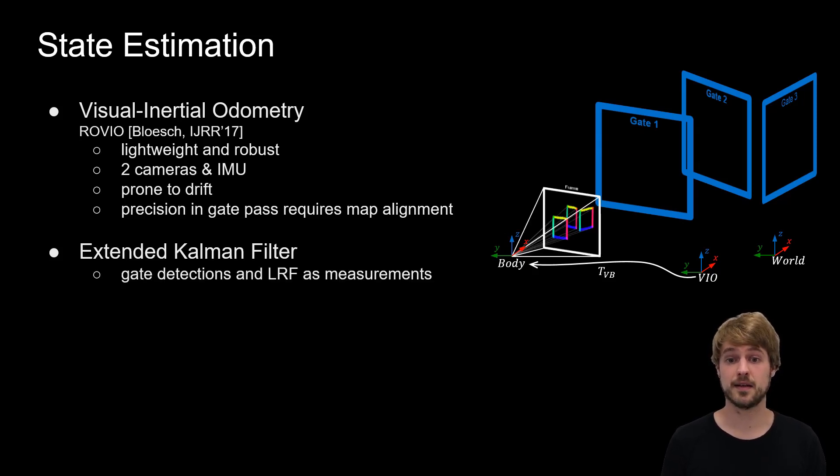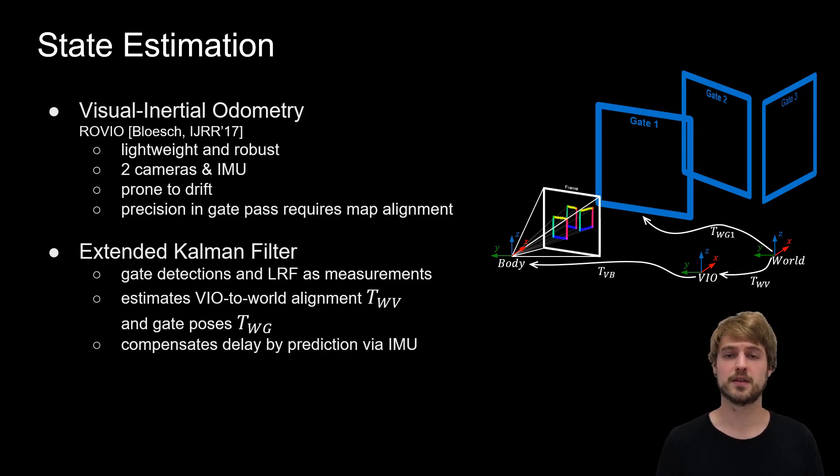This estimates a VIO to world frame alignment and all the gate poses in the world frame. Furthermore, it compensates for delays by predicting forward the IMU. And this provides us with a fast and precise state estimate.